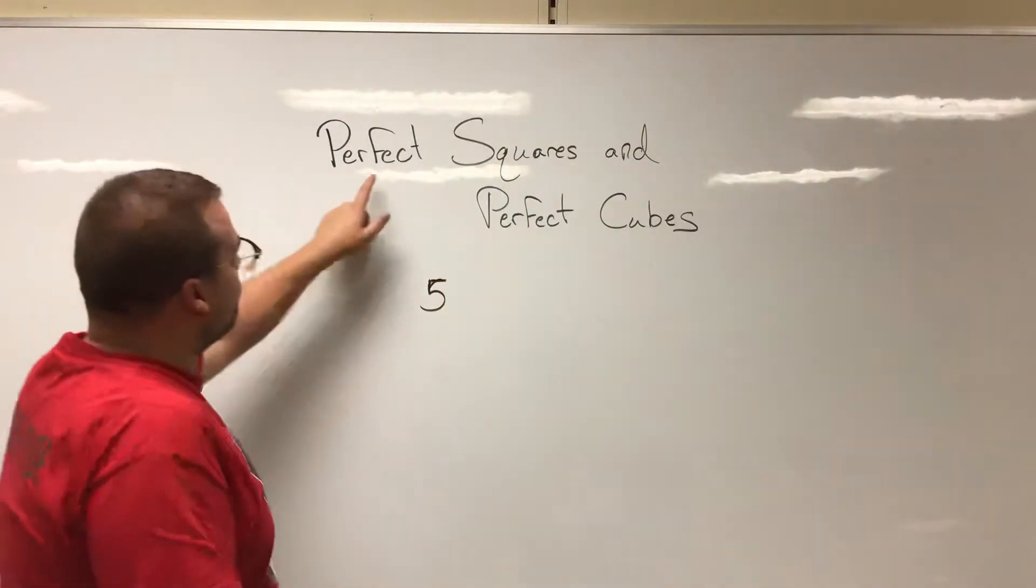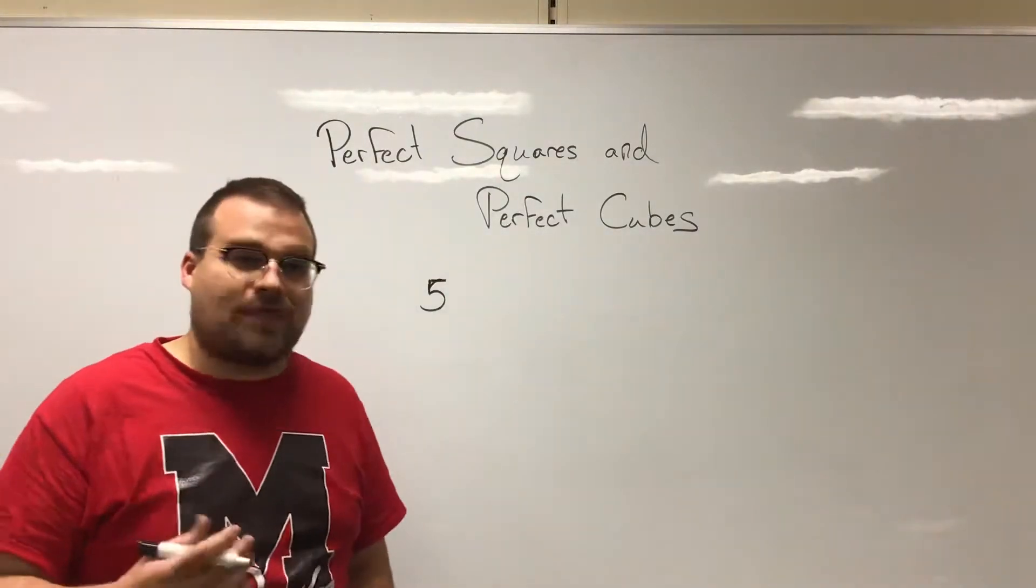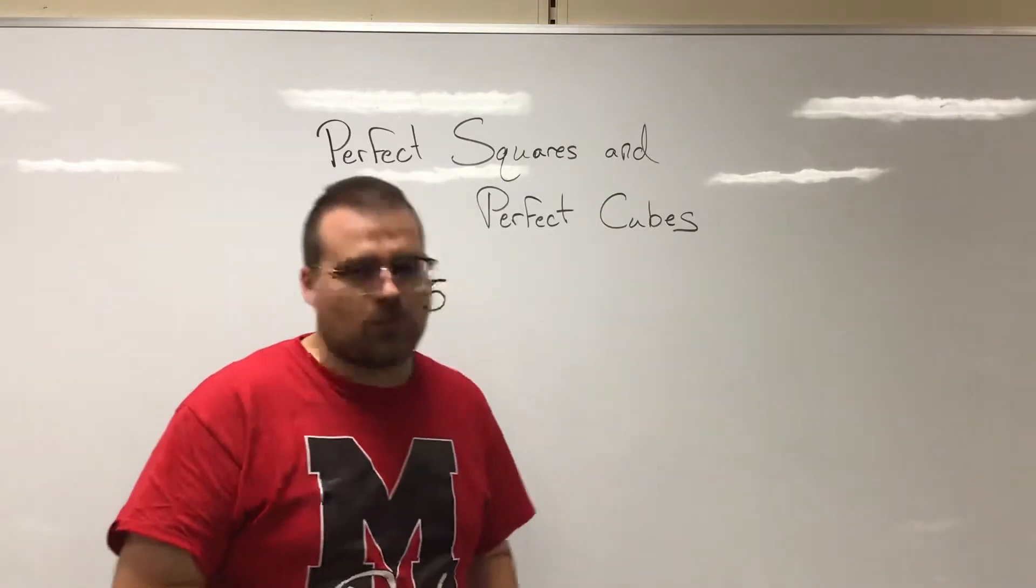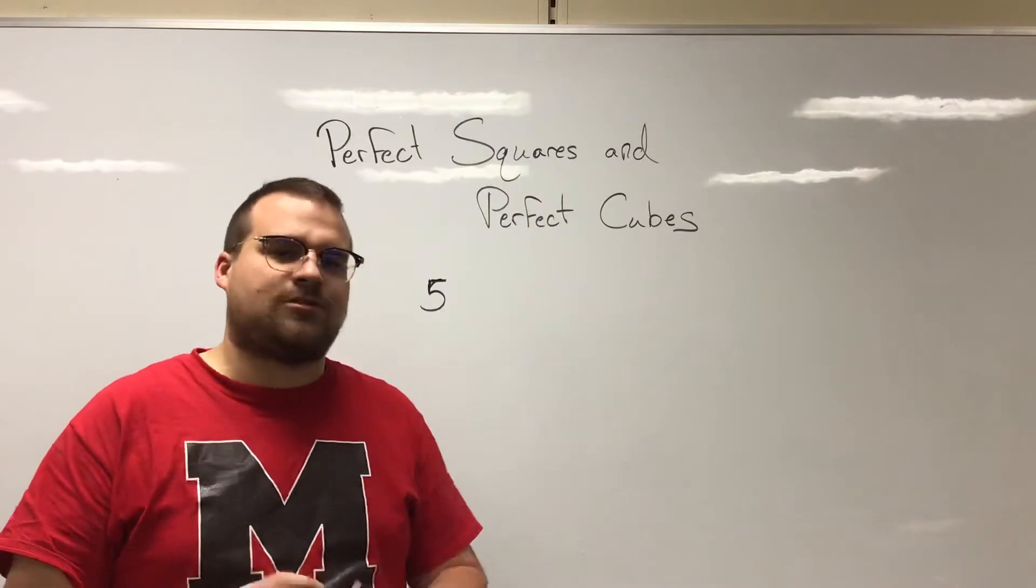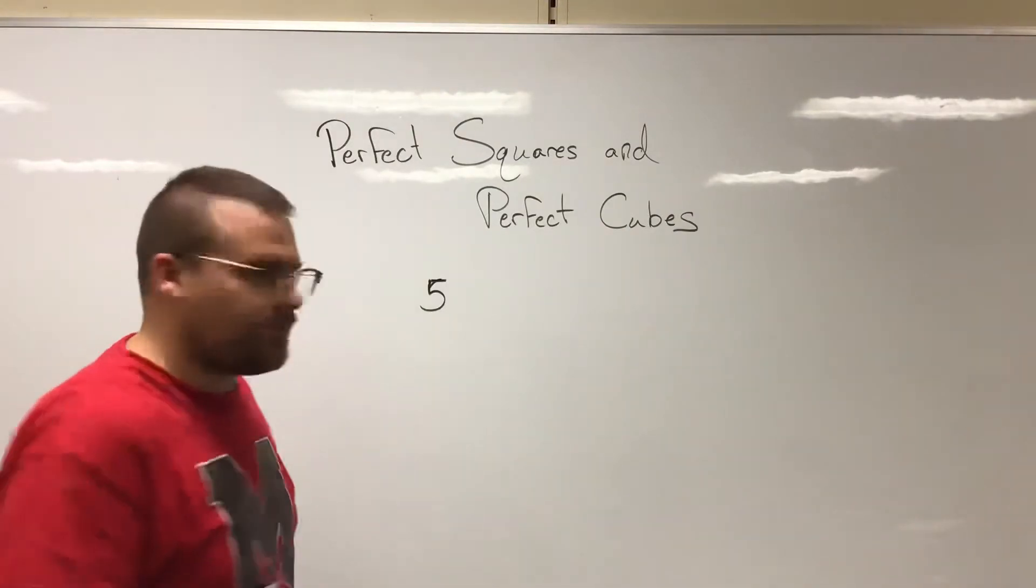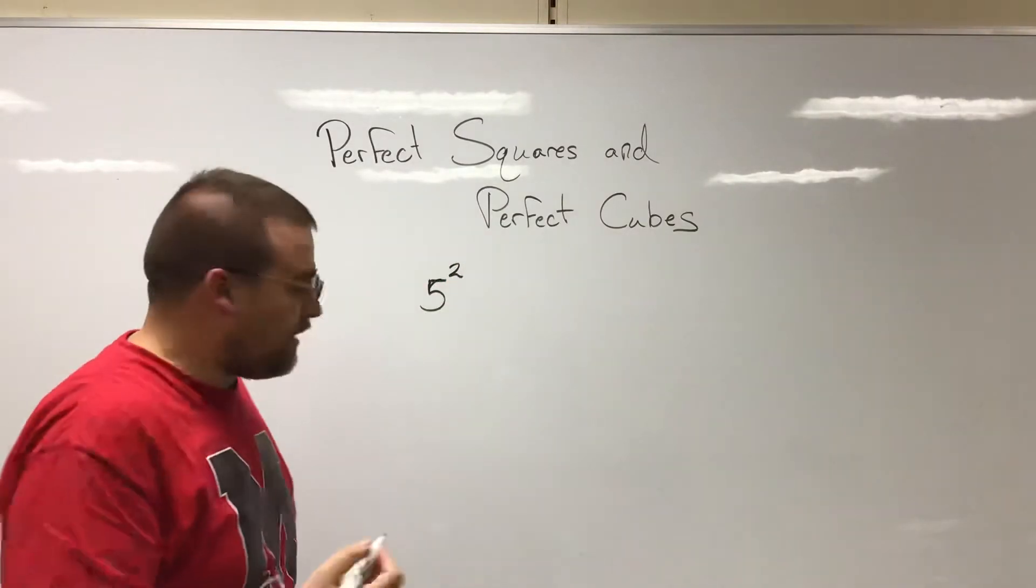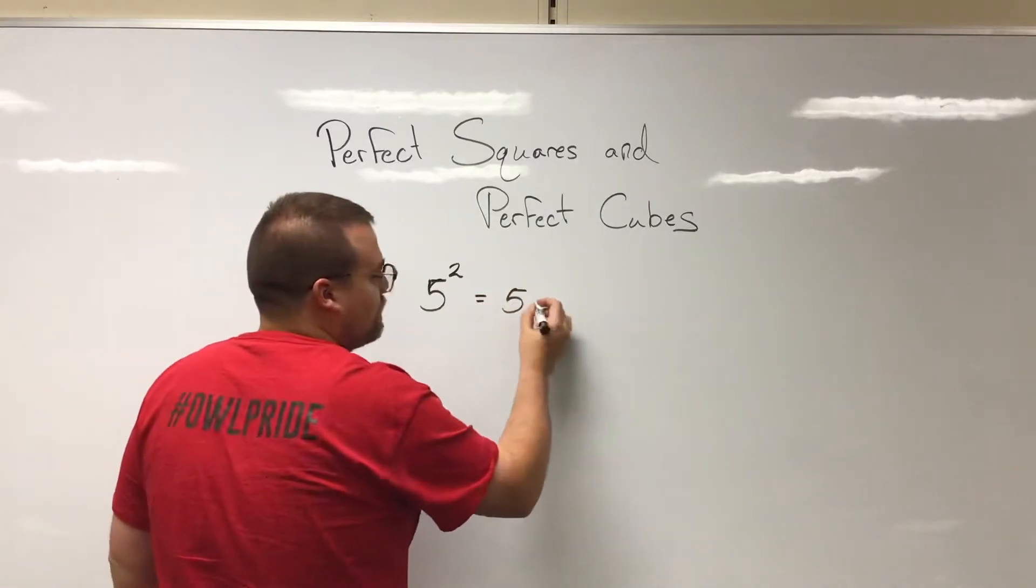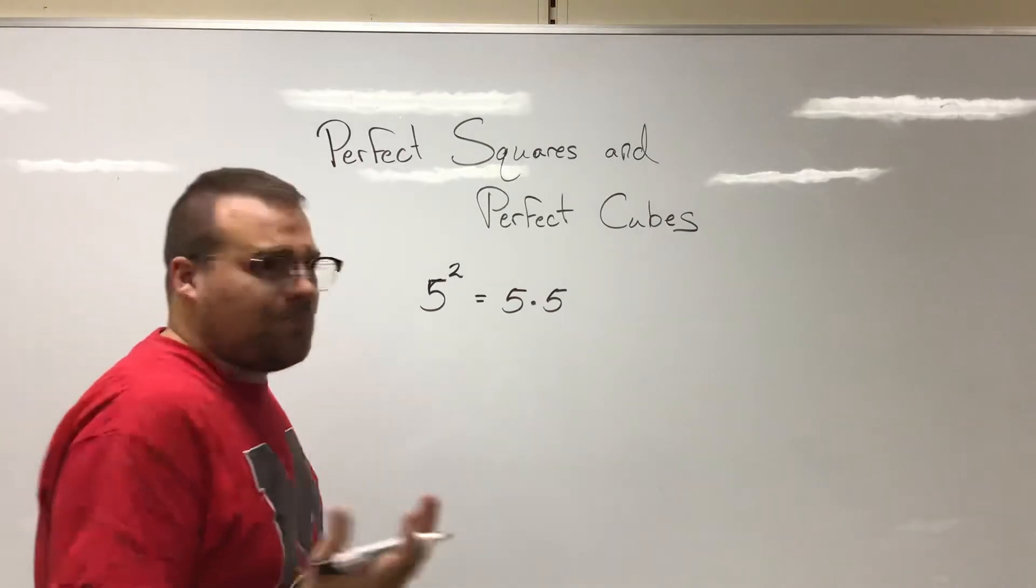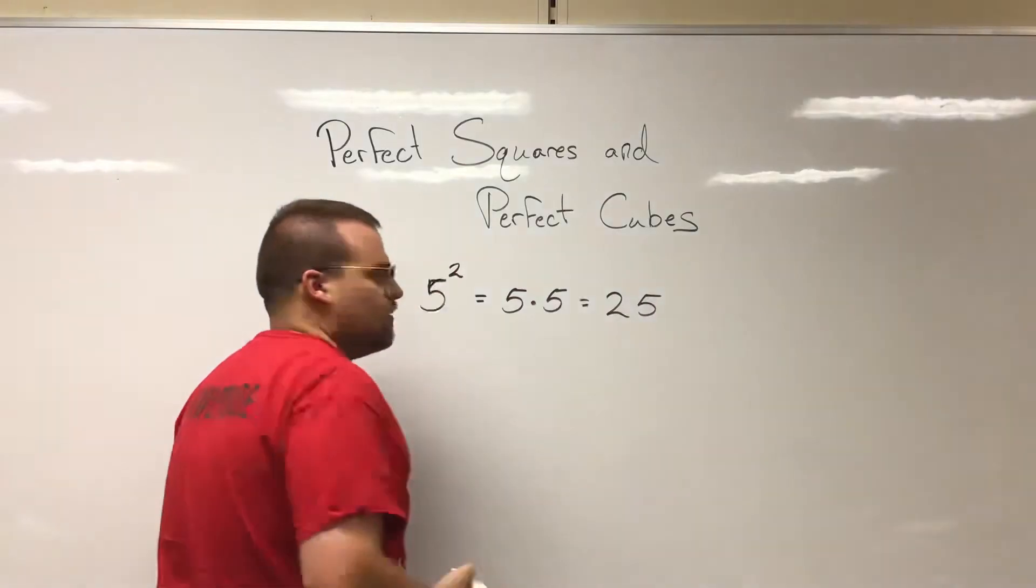But a perfect square refers to whenever we have numbers that are what we call squared. That may be a term you've heard before as it relates to exponents or it might not. Whenever we talk about a base number squared, we talk about it to the second power. That means, in this case, five times five or five times itself. What would five times five be? 25.